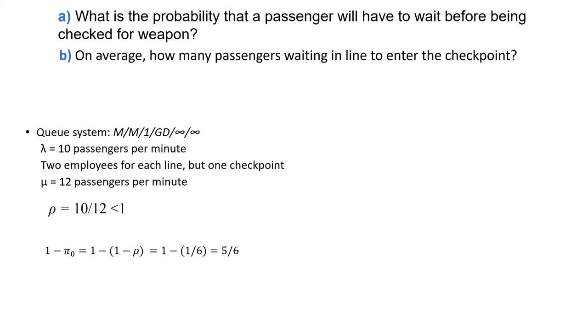Part B: On average, how many passengers waiting in line to enter the checkpoint? That's L sub q. We already developed the formula for that: rho squared over 1 minus rho, which is 25 over 6 customers.